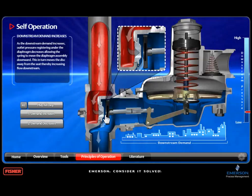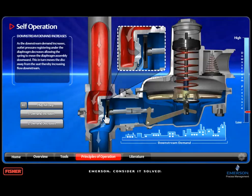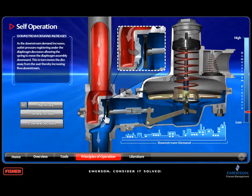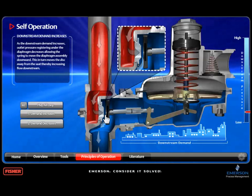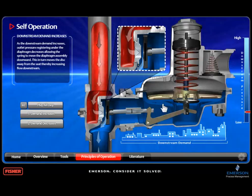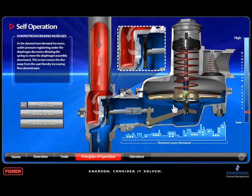The most important takeaway is that the only way the disc will move in any direction to restrict or allow more flow is if the diaphragm senses a change in outlet pressure.